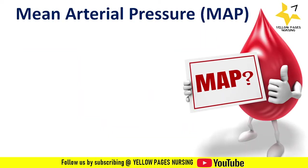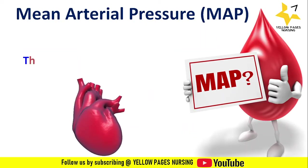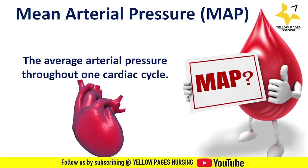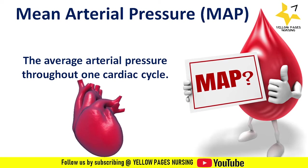Mean arterial pressure is the average arterial pressure throughout one cardiac cycle. The cardiac cycle is defined as a sequence of alternating contraction and relaxation of the atria and ventricles in order to pump blood throughout the body — which means systole and diastole.